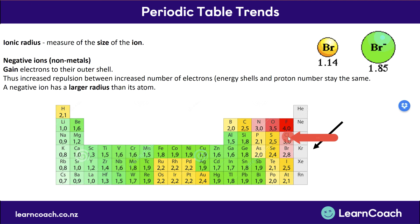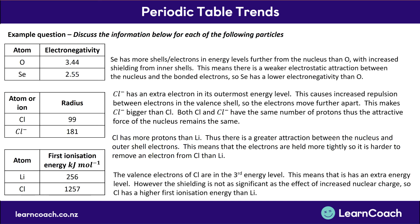Chlorine has 17 protons, whereas lithium only has three. Because of this, the extra protons offset the fact that chlorine's valence electrons are further out and give it a higher electronegativity. Because chlorine has a higher electronegativity, it is harder to take its electrons away and consequently it takes more energy — so the ionization energy for chlorine is higher than for lithium.